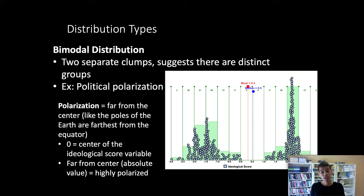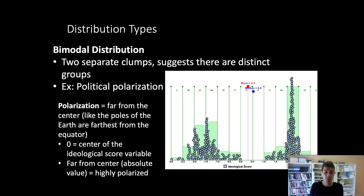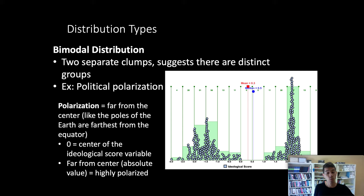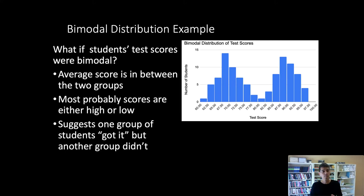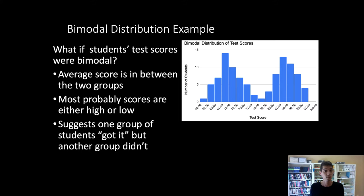When we have a bimodal distribution, measures of central tendency can be misleading. The mean and median — which measure the middle or typical value for a continuous variable — fall between the two groups rather than in the middle of either one. So if we see a bimodal distribution, we should recognize that average values will be between the groups, and there's probably some predictor variable separating one group from the other. In the test score example, this would be like half the students getting the material and the other half really struggling.